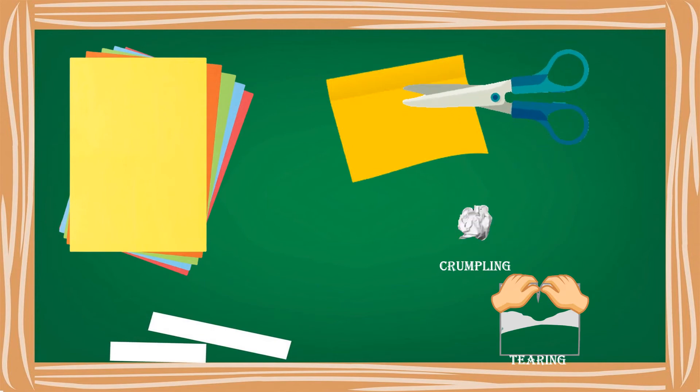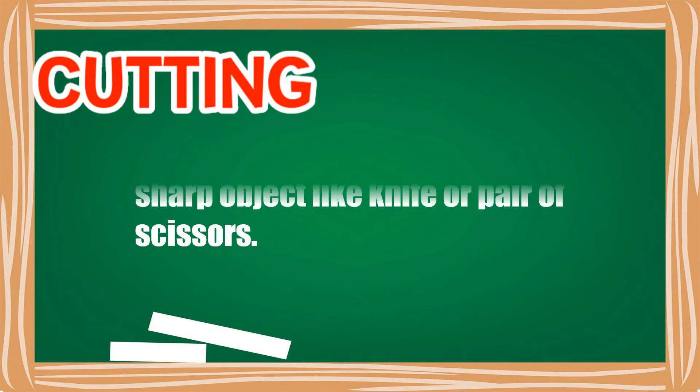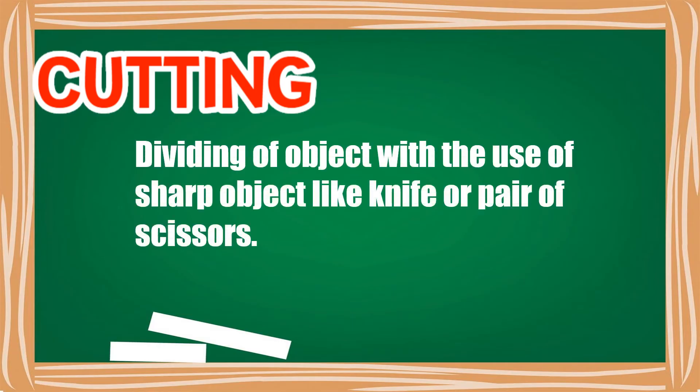Cutting, crumpling, and tearing are ways on how we can change the size and shape of the paper. Cutting means dividing of objects with the use of sharp objects like knife or pair of scissors.